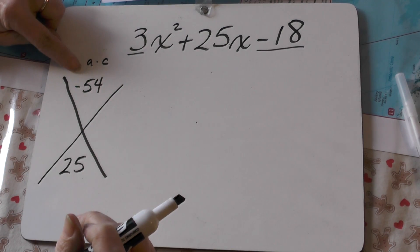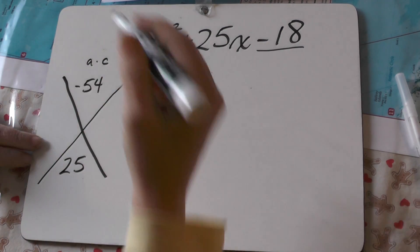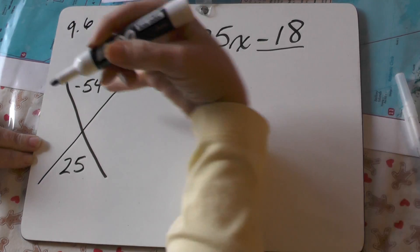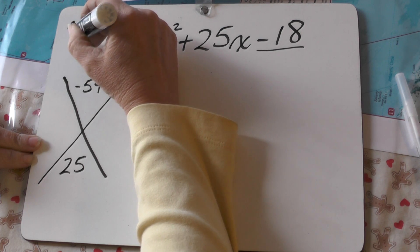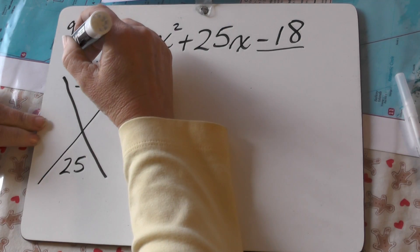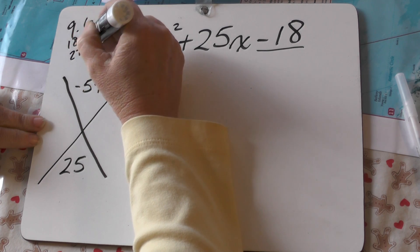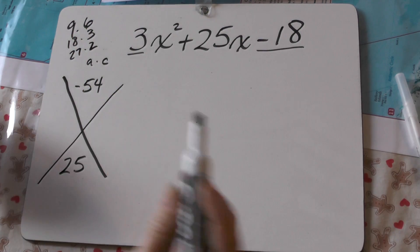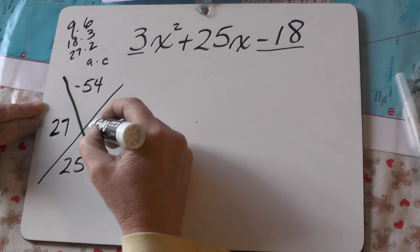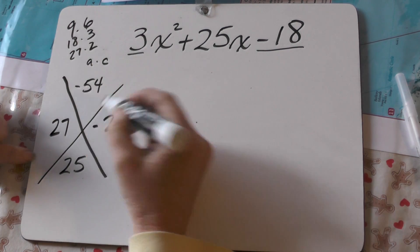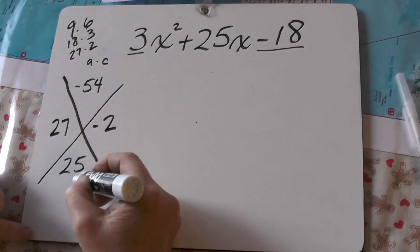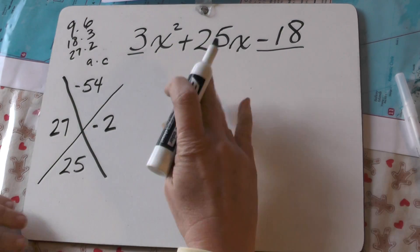So, two factors of 54. Well, 54, the first thing my mind goes to is 9 times 6 is 54, but I can't get 25 out of that. 18 times 3 is 54. I can't get 25 out of that. Let's cut it in half. 27 times 2. Oh, there we go. I can get 25 out of that, right? 27 times negative 2 is 54. 27 plus negative 2 is positive 25. I'm done with that.